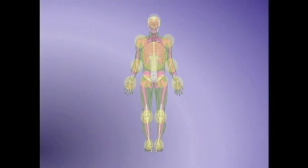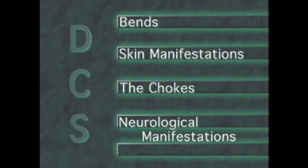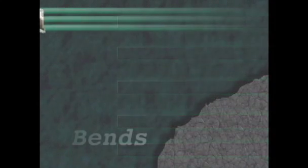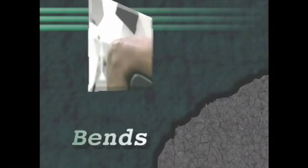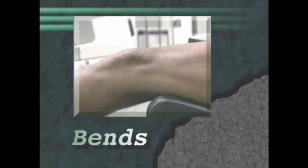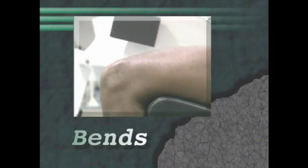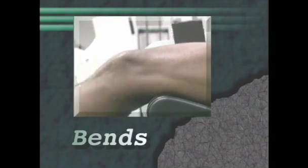There are specific symptoms for each bubble formation site. The different locations represent different types of decompression sickness. There are four types of decompression sickness, and each has a different effect on the body. The bends is pain in and around the large joints of the body, and is the most common type of decompression sickness in aviation.